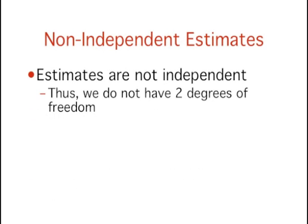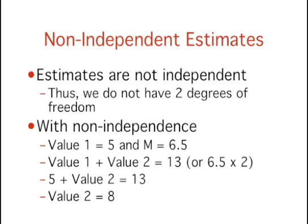The important point is that the two estimates are not independent and therefore we do not have 2 degrees of freedom. Another way to think about the non-independence is to consider that if you knew the mean and one of the scores, you would know the other score. For example, if value 1 is 5 and the mean is 6.5, you can compute that the total of the two scores is 13 and therefore that value 2 must be 8.